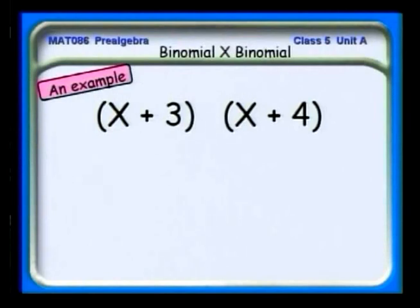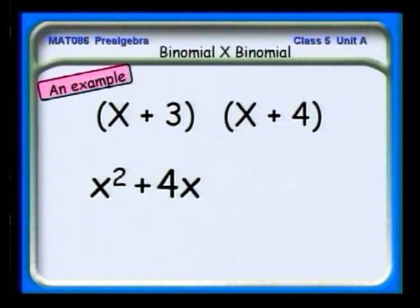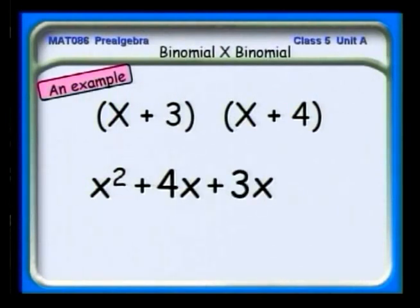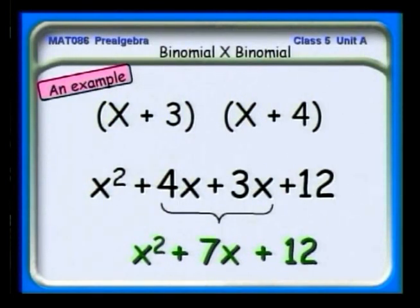Let's look at this algebraically. First, we multiply x times x to get x squared — that's x multiplied by the first term on the right. Next, we multiply x by the second term on the right and get 4x. Now for the second term on the left: this gives us 3x. And finally the numbers: 3 times 4 is 12. We have 3x and 4x in the middle, which combine to 7x. So the final result is x squared plus 7x plus 12.